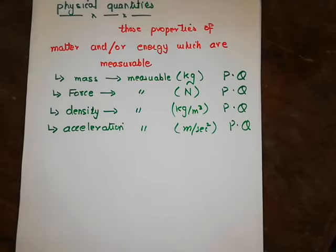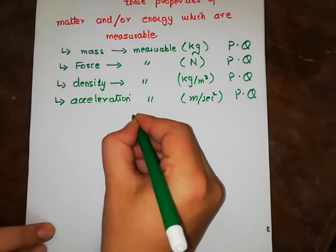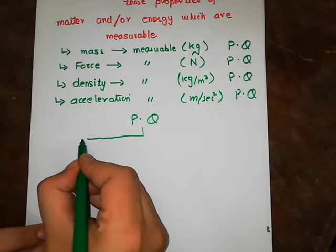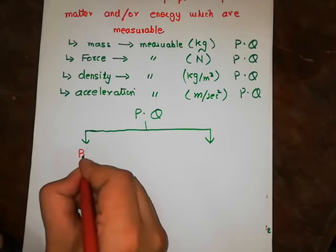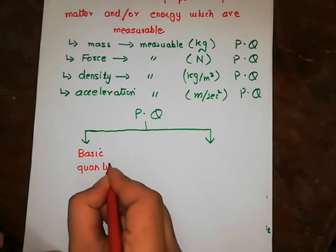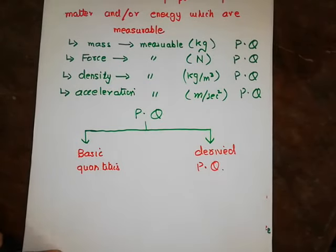A physical quantity is one that physics can measure — we can measure it using established rules of measurement. Every physical quantity has a unit; the unit of mass is kg. Physical quantities can be divided into two categories: basic physical quantities and derived physical quantities.